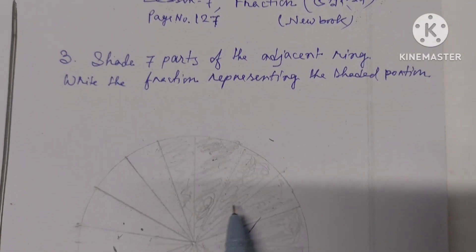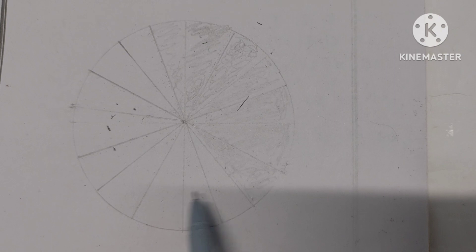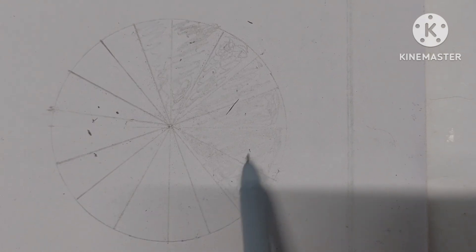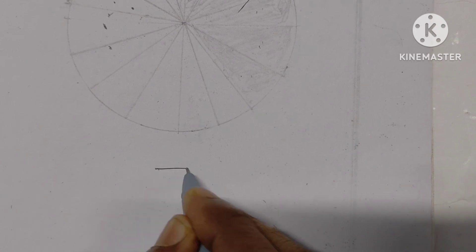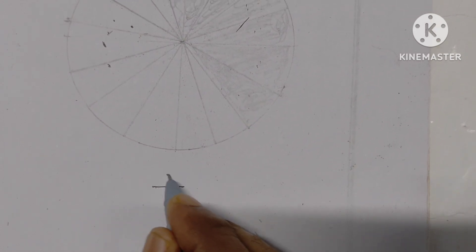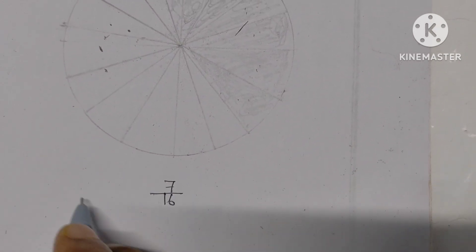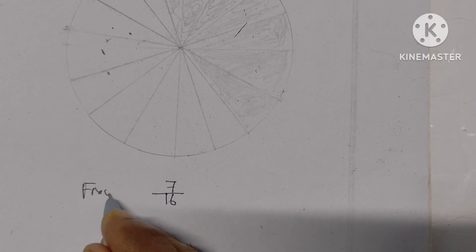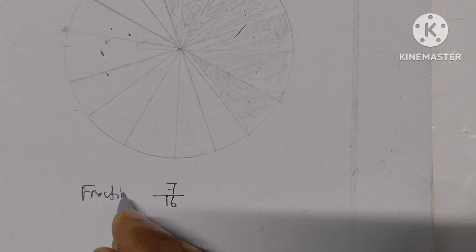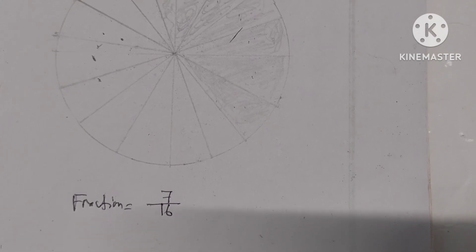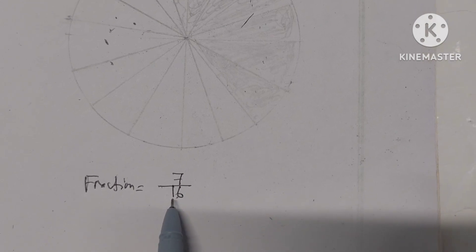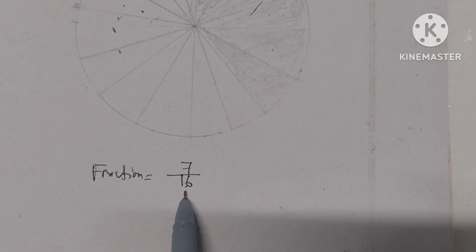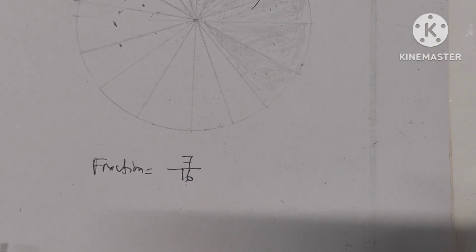We can count like this: out of 16, 1, 2, 3, 4, 5, 6, 7 parts are shaded. So the required fraction of shaded parts is 7 by 16.